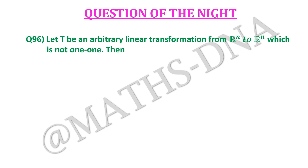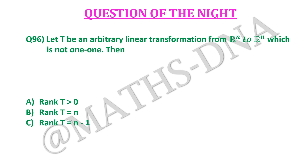In this video, we are going to discuss a question of linear algebra. The question is: let T be an arbitrary linear transformation from Rn to Rn, which is not one-to-one. The options are: (a) rank of T is greater than 0, (b) rank of T is equal to n, (c) rank of T is equal to n-1, and (d) rank of T is less than n.